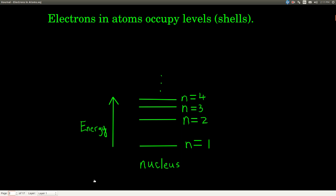We label these levels or shells with the letter N, and it can have an integer value equal to 1, 2, 3, 4, et cetera. If we imagine the nucleus as being at the center, then each level or shell goes out from the nucleus. The farther that level or shell is from the nucleus, the higher its energy. So higher N means higher energy.